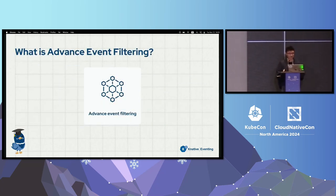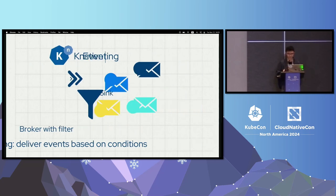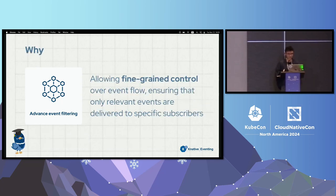Let's talk about advanced event filtering. Different events might have different types and need to be delivered to different destinations based on their metadata and CloudEvents attributes. With the help of filters, you can filter events based on event type and allow the broker to deliver them to the correct destinations. Advanced filters provide more complex filtering — for example, you can filter events that have 'com.github' as a prefix in their type or other CloudEvents attributes. This precise control gives developers fine-grained control and more flexibility over where events should go and what the destination should be.